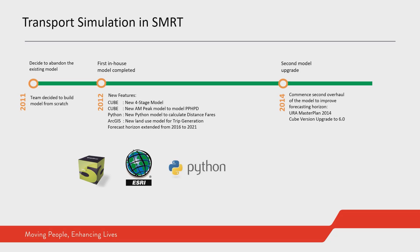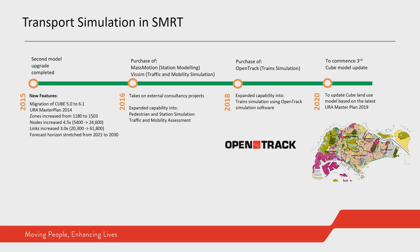Two years later in 2014, we had to start the second model upgrade, mainly because of the release of the Master Plan 2014, and also there was a major CUBE version upgrade from 5 to 6.0. In 2015, we completed the second overhaul. In the new model, the number of zones was increased from 1,180 to 1,503 to account for new developments in Master Plan 2014. The forecasting horizon was also stretched from 2021 to 2030, and we migrated the software from version 5 to 6.1.